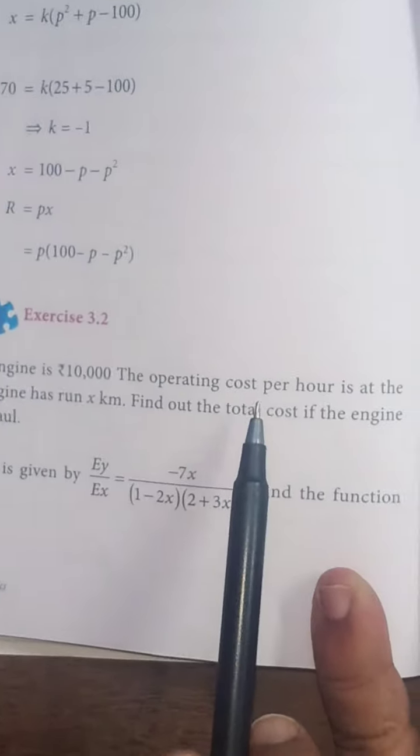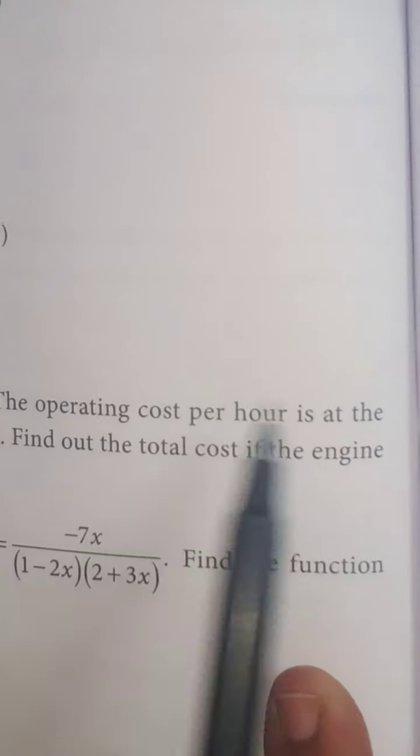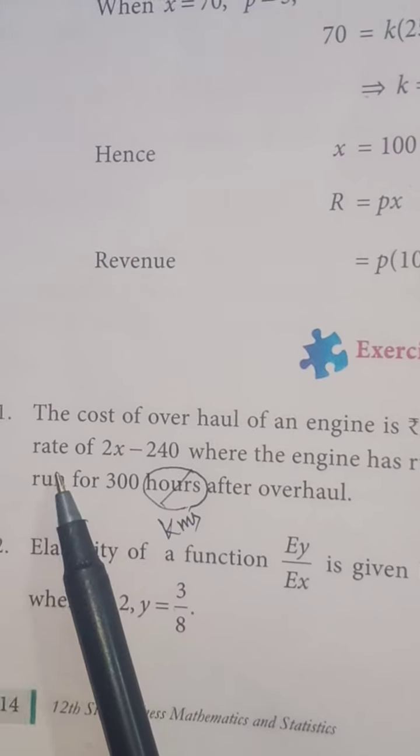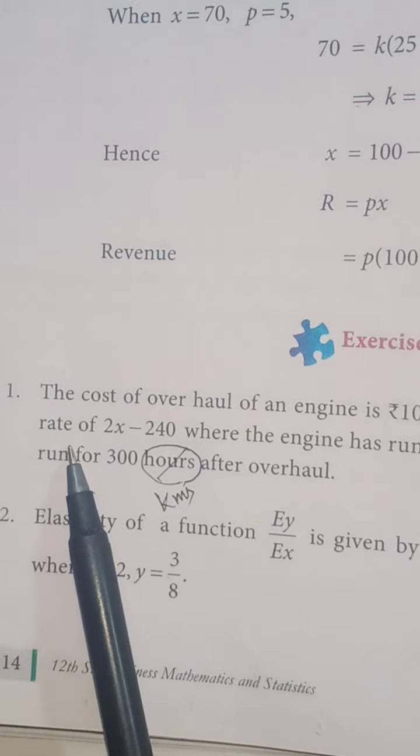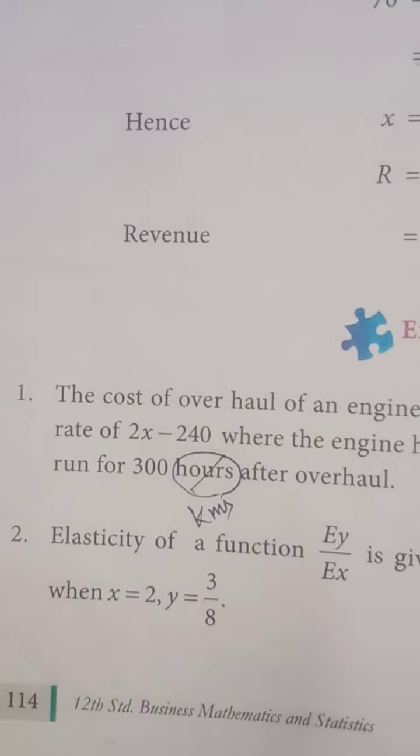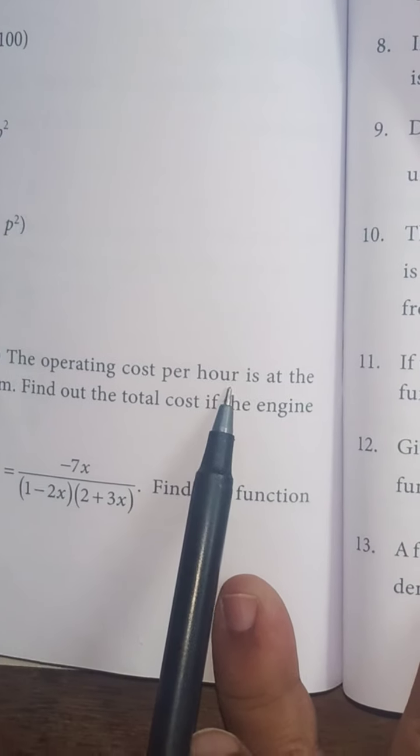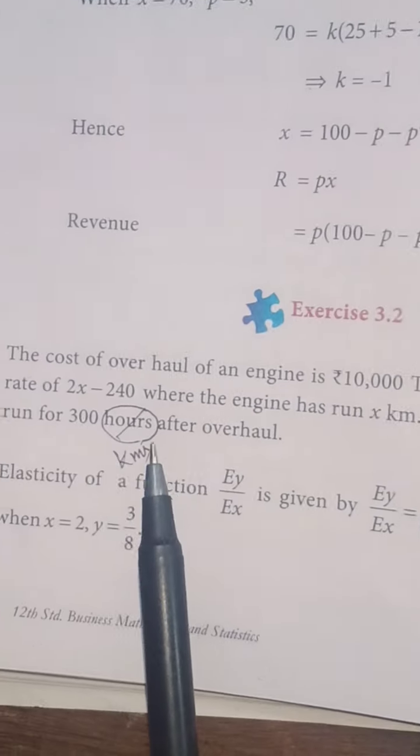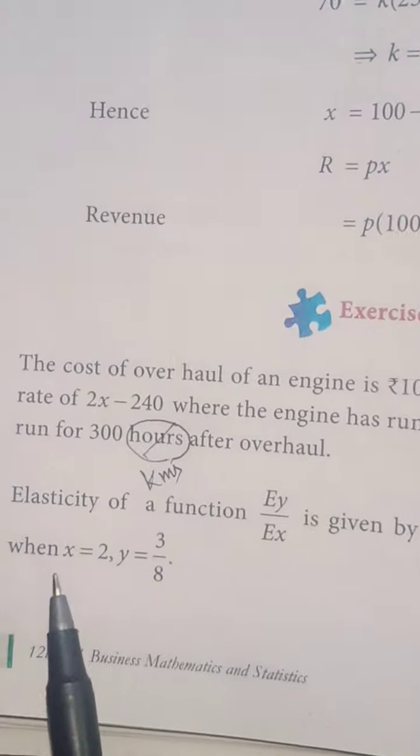Now, the operating cost per hour is at the rate of. Already I told you, whenever you are given the word at the rate, you have to introduce a differentiation. So here what is given cost? Cost per hour is given. So what I have to write? dC by dX. dC by dX.